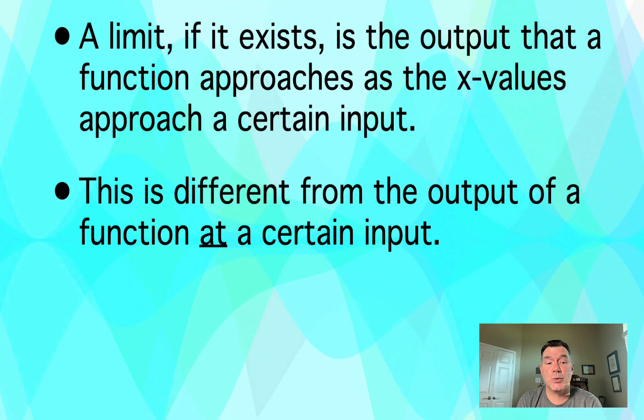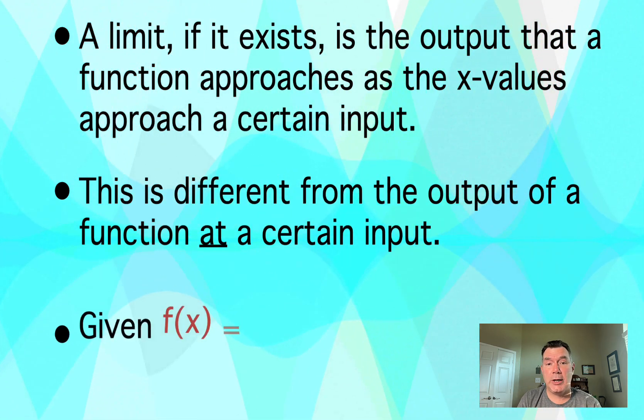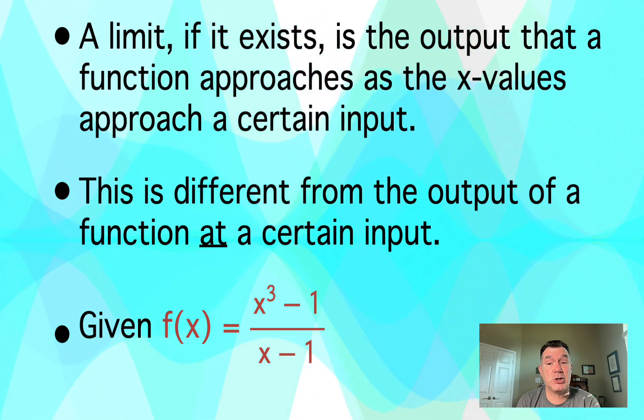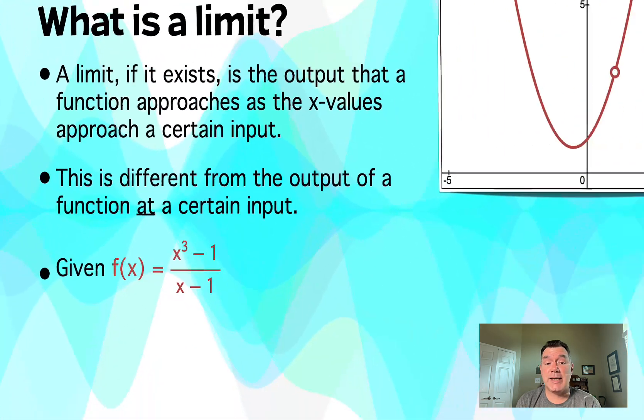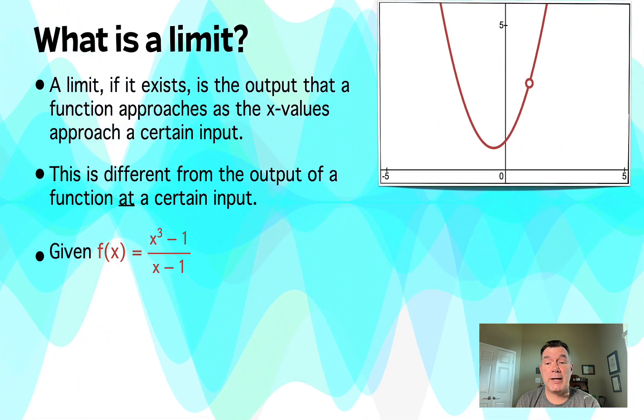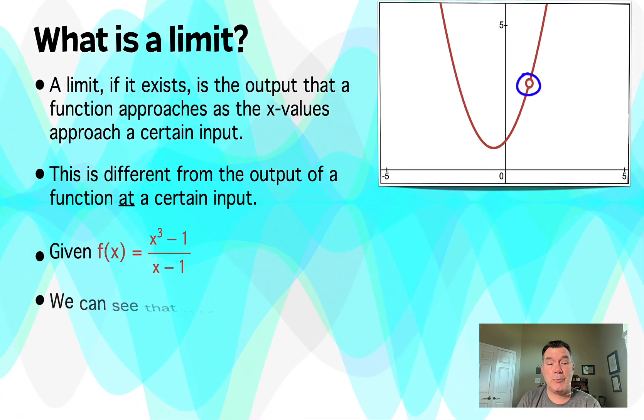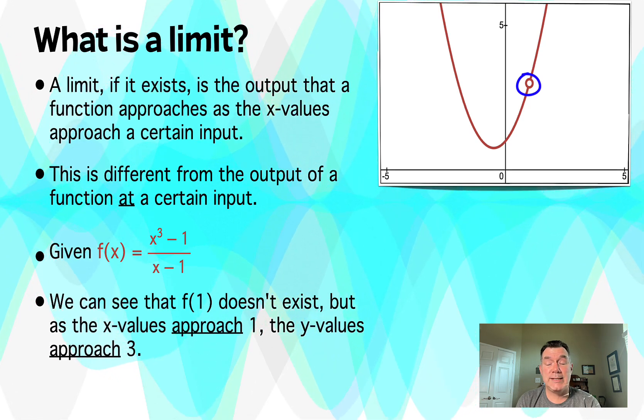That's not to be confused with what the function is actually worth at a certain input. We're looking on either side of that input. So for example, if I have the function f(x) = (x³ - 1)/(x - 1), the graph of it is there on the right. And as you can see, at x = 1, we have a problem. f(1) doesn't exist because if I input x = 1 into that function, I'm going to get 0/0, which is indeterminate. So the function doesn't actually exist there.